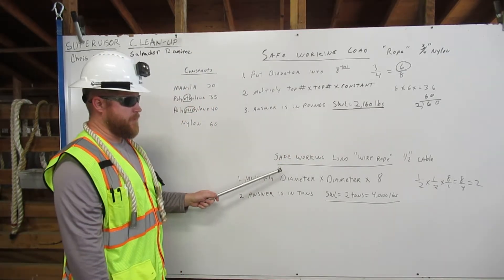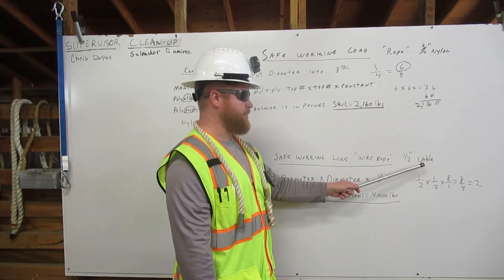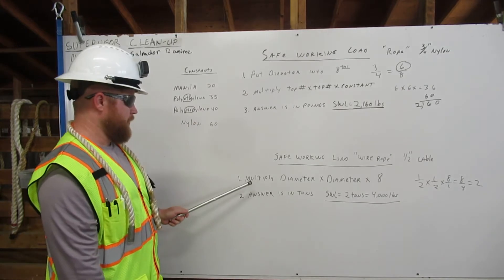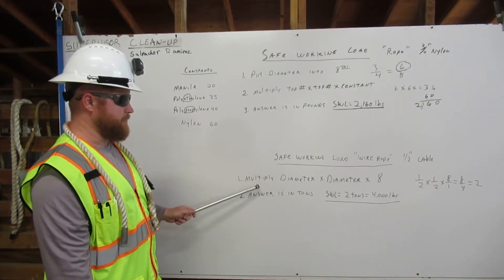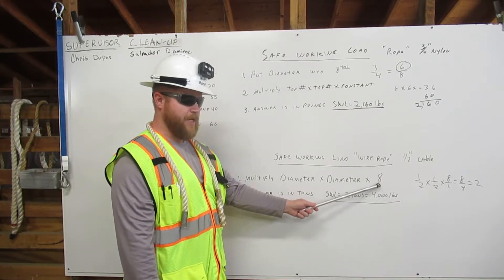The safe working load of wire rope, this one we're using half inch cable. First, we will multiply the diameter times the diameter times eight.